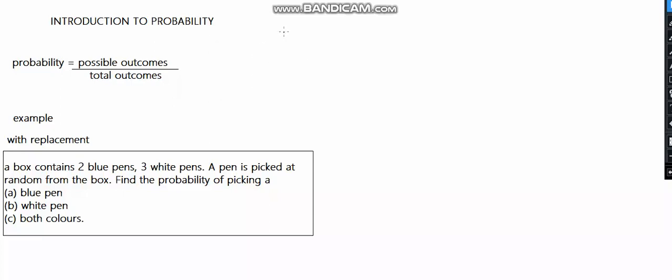We need to find the total number of pens. The total is 2 + 3 = 5 pens. To find the probability of a blue pen: probability of blue pens equals possible outcomes of blue pens, which is 2, over total outcomes, which is 5. So P(blue) = 2/5.